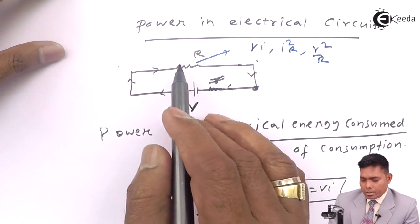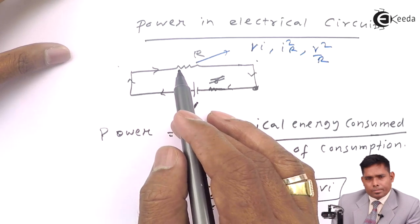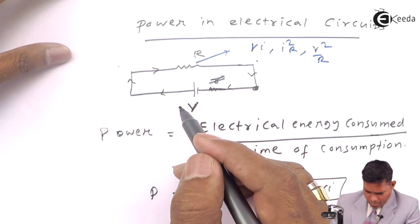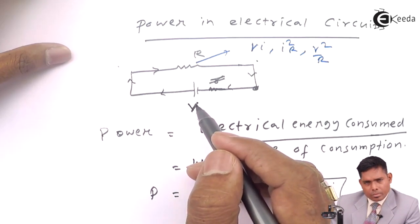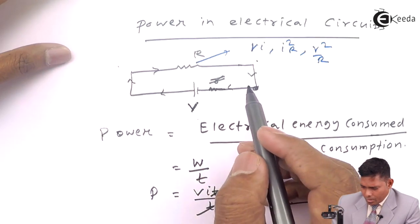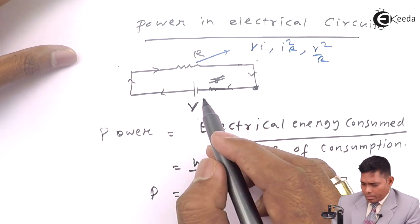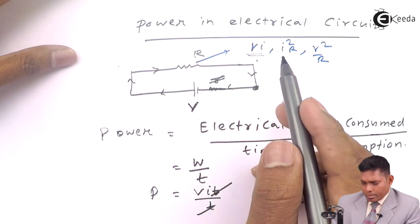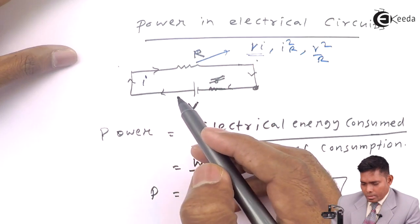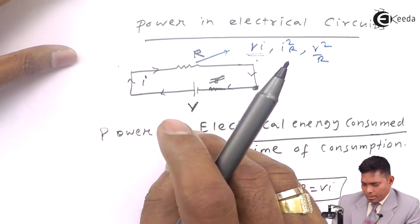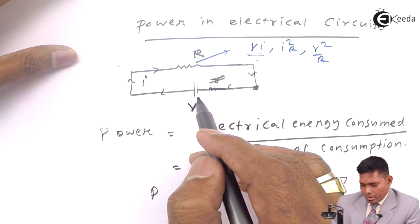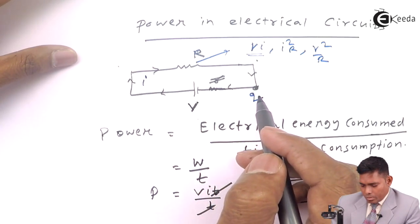In case of power sent by battery, this is V into I only. Power sent by battery is V into I—this is the only formula available. If I is the current that flows through the resistance R, power sent by battery is VI.